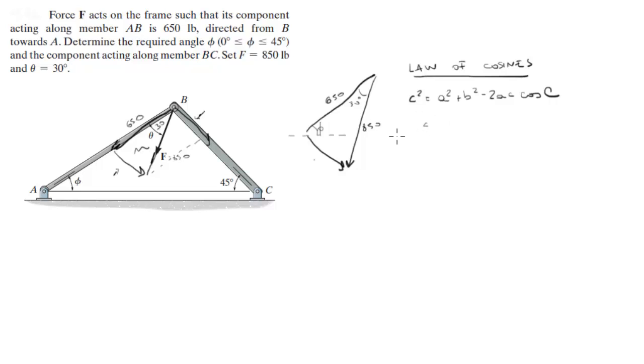Now, 650 squared plus 850 squared minus 2 times 650 times 850 cosine of 30. You do this calculation, you square root it, and you get c, which is equal to the BC component, which is equal to 433.64.